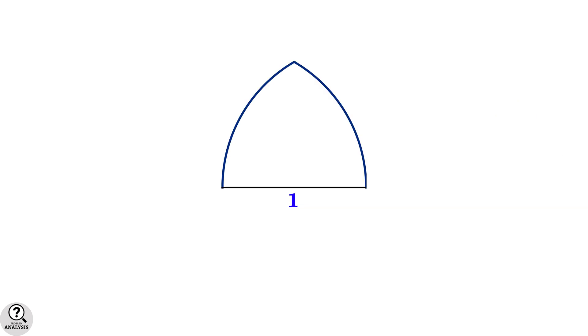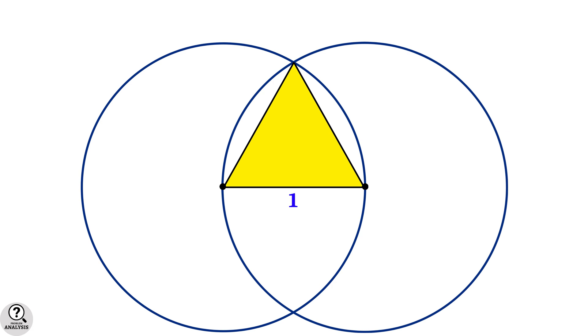If we closely observe this part, we can see an equilateral triangle here. And why is it equilateral because if we consider the whole figure, we can see that each side of this triangle is in fact a radius of each of these circles.